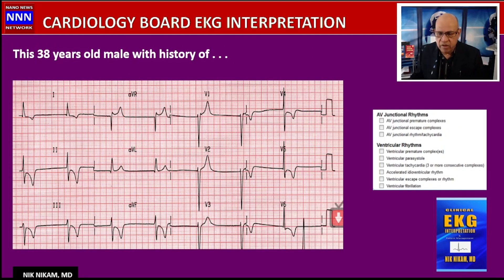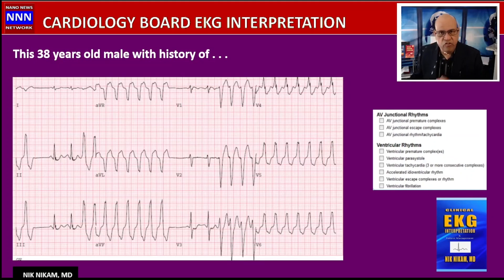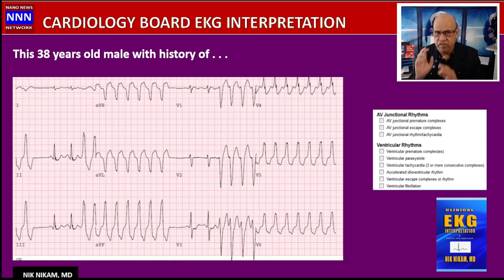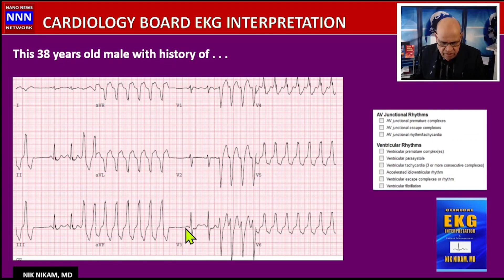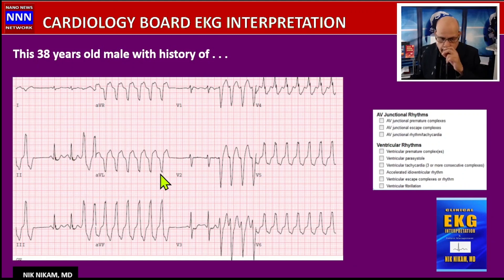For ventricular arrhythmias: premature ventricular beats, couplets, triplets, short bursts of ventricular tachycardia. In a patient with atrial fibrillation, be aware of Ashman phenomenon. On the example shown, we see a P wave, then a burst of what looks like ventricular tachycardia — a sinus rhythm with a PVC precipitating VT. These are things we should be able to identify.